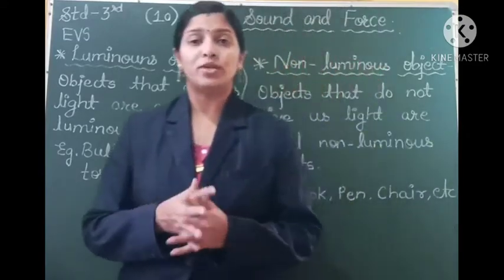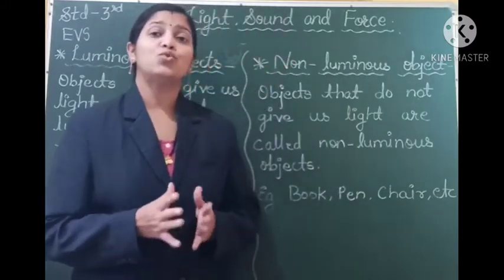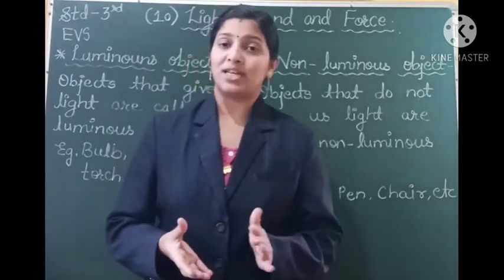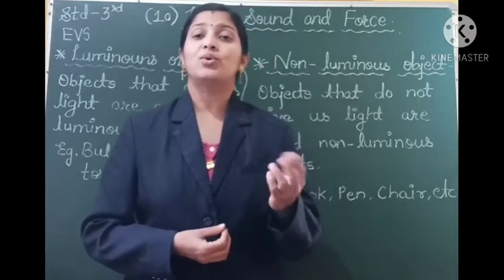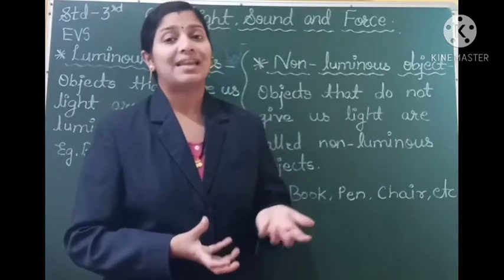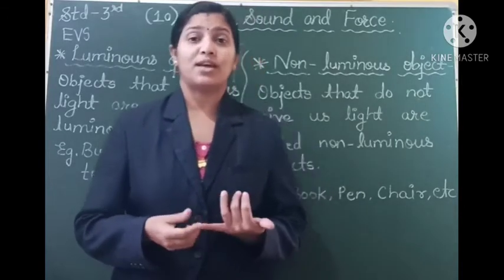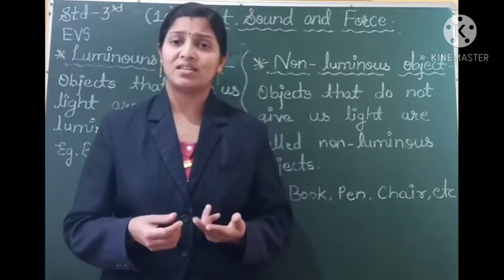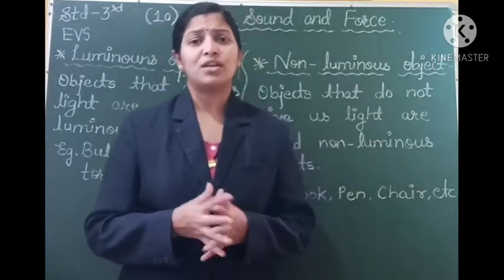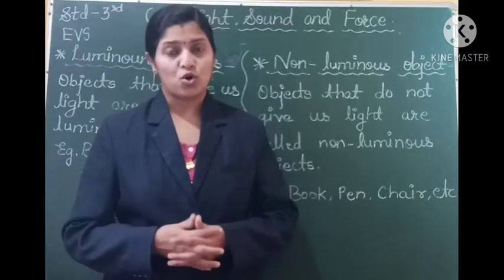The second term is non-luminous objects. The definition is: objects that do not give us light are called non-luminous objects. All the objects in our surroundings which do not give light to us — they do not have the capability to give light — all such objects are called non-luminous objects. For example, we have pen, pencil, eraser, chalk, board, chair, table. All these are not able to give us light on their own, so they are called non-luminous objects.